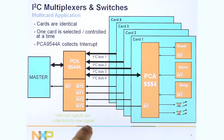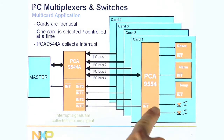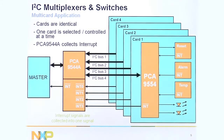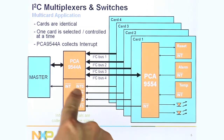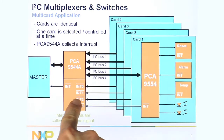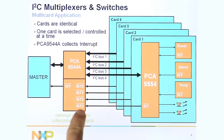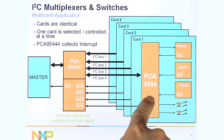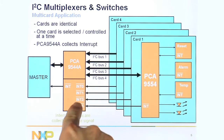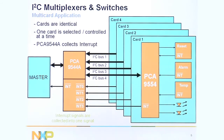Here's an application showing a 4-channel multiplexer. Each one of these cards has the same address on the GPIO, and so one channel at a time you can talk to the cards. This device here, the PCA9540A, has an interrupt collector. Any of these interrupts from the GPIO go to this one device and then there's only one interrupt that goes to the master.